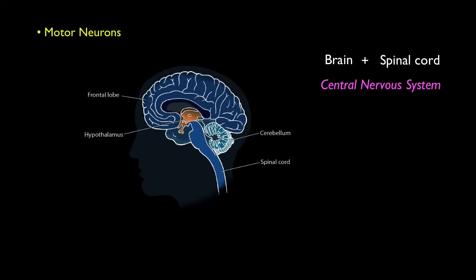Motor neurons carry information, often instructions, from the central nervous system outward to the rest of the body. There are two kinds of motor neurons: somatic and autonomic.